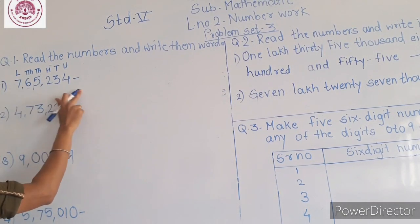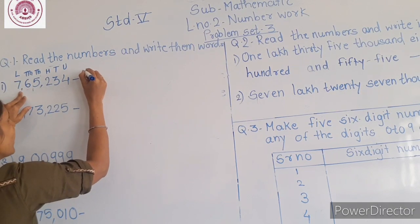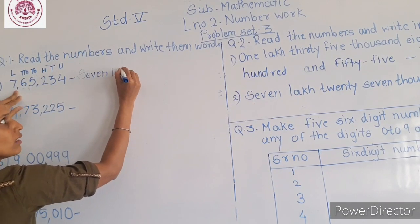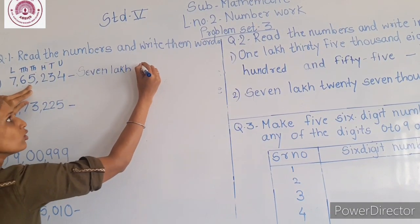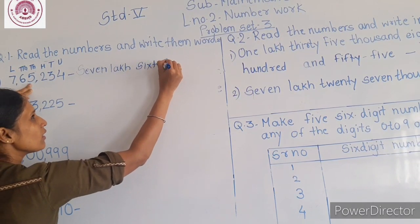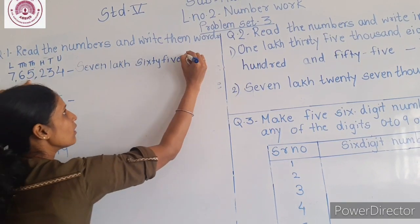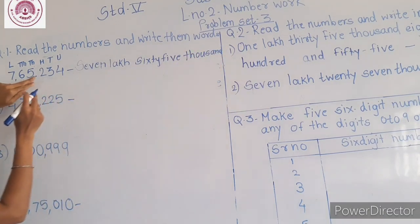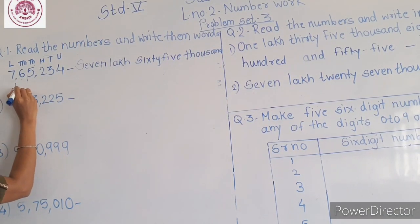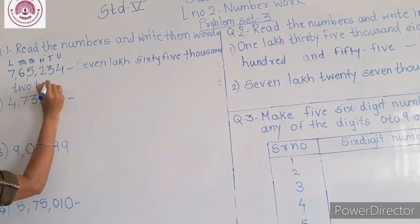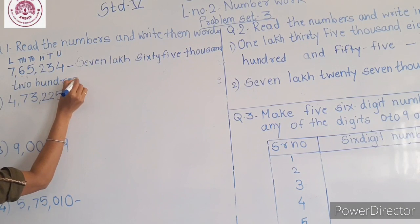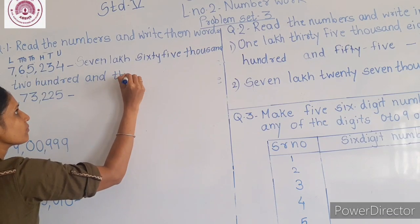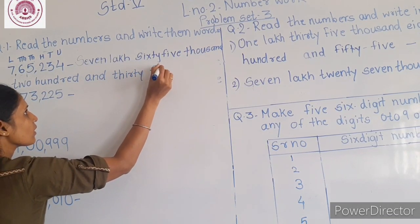So how will we write this number? It's 7 lakh, 65 thousand, 200 and 34.